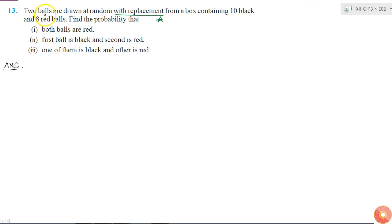The first part asks: find the probability that both balls are red. If we take out one ball, the probability of taking a red ball is 8 by 18, which is 4 by 9. And probability of a black ball is 10 by 18, which is 5 by 9.